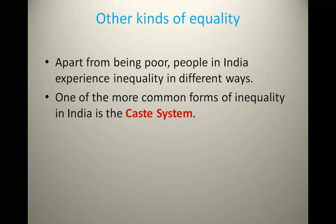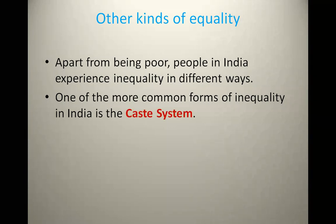One of the most common forms of inequality in India is the caste system. In our Indian society there are four castes: Brahman, Vaishya, Shudra, and Kshatriya. Shudra are the lowest rank in the caste system in India, which is also known as untouchability. We will discuss this kind of inequality in India in this section.